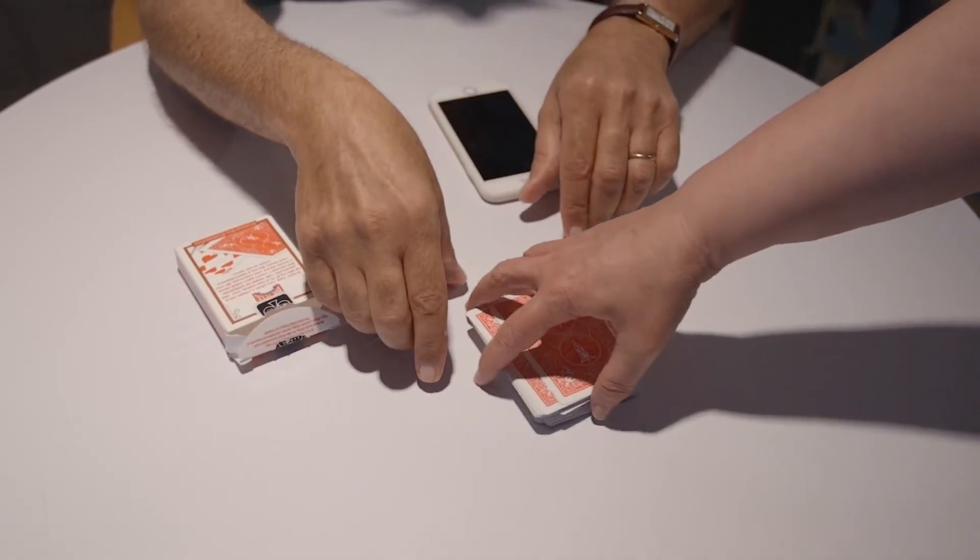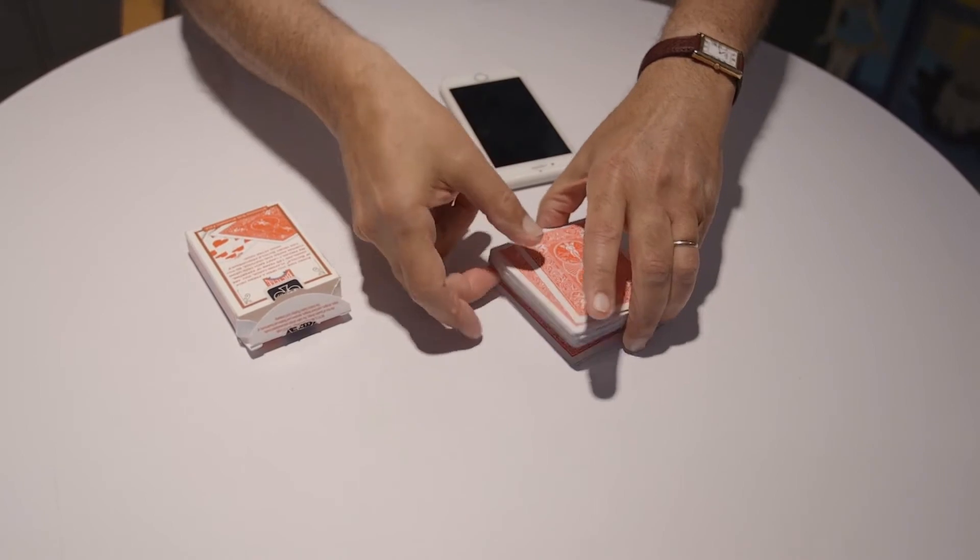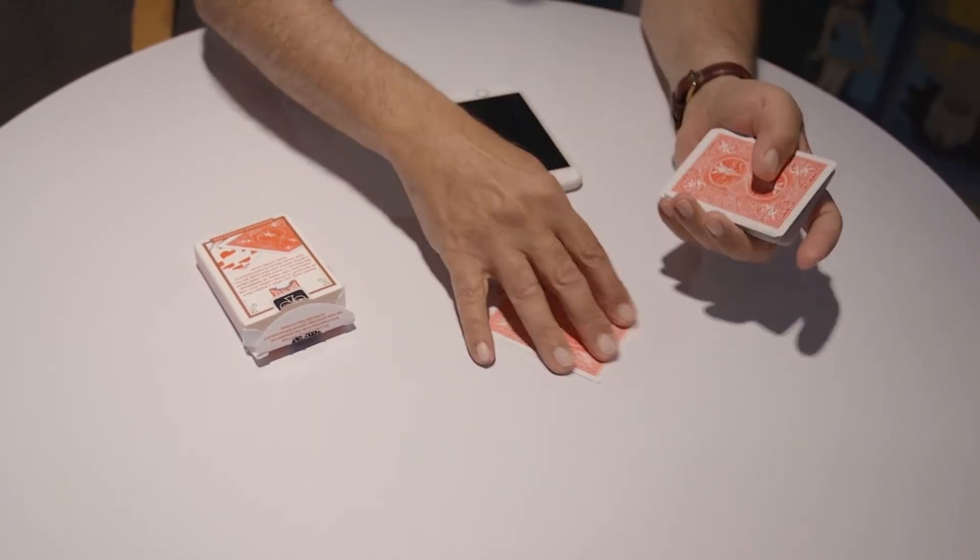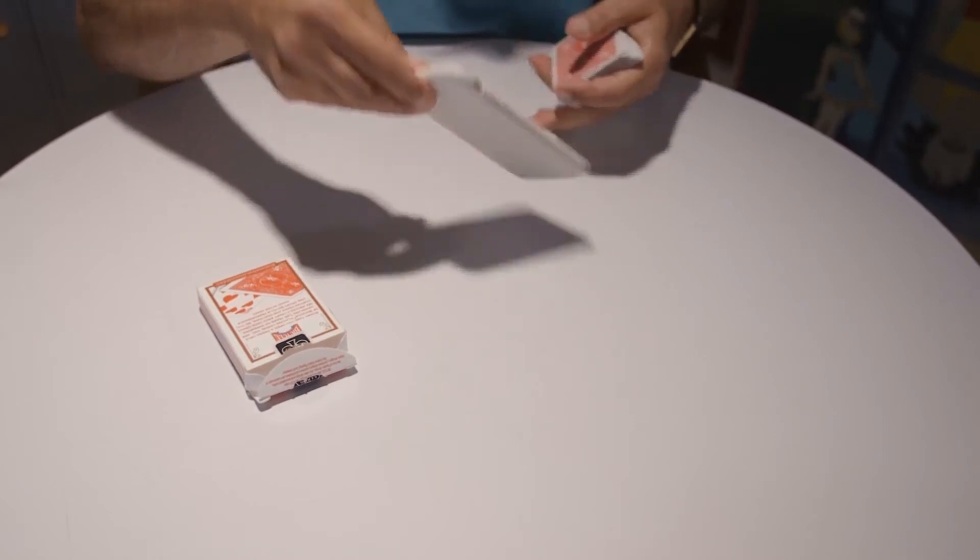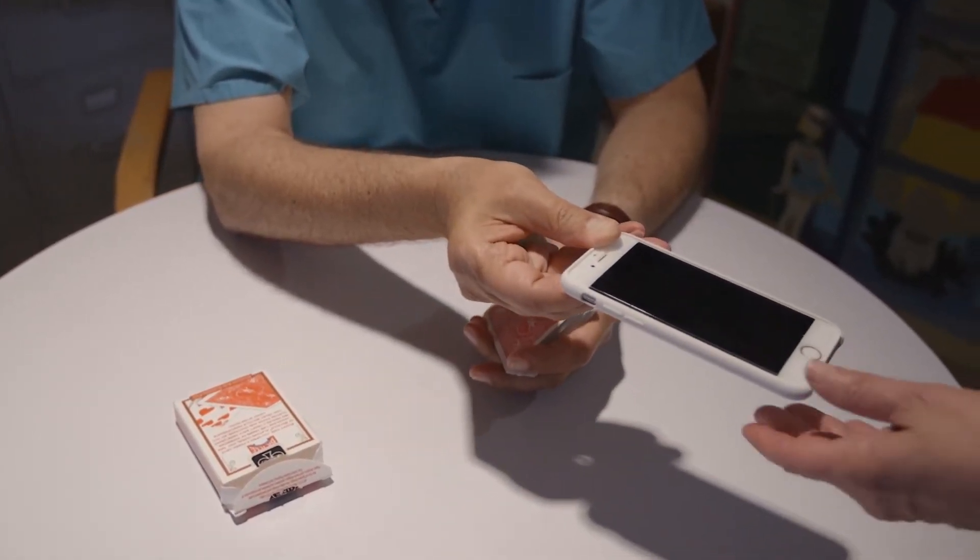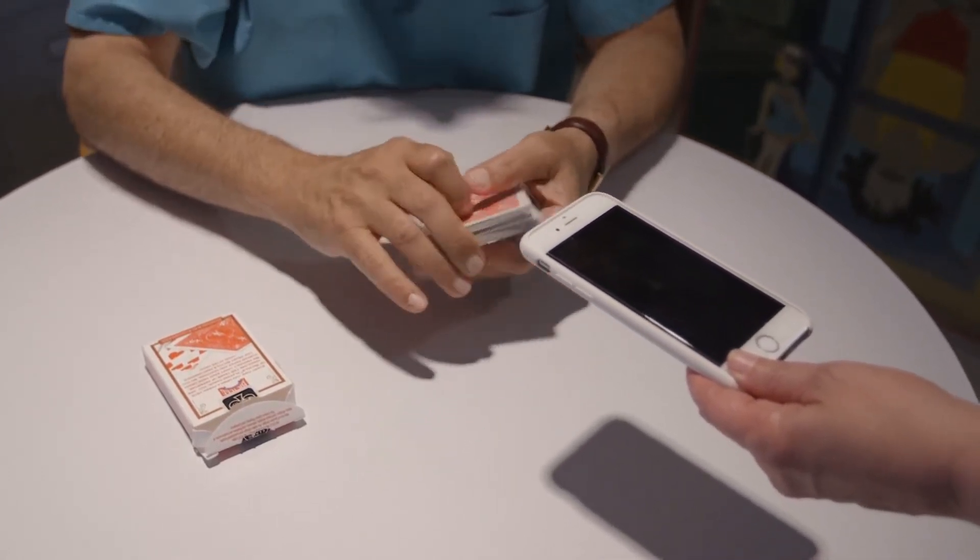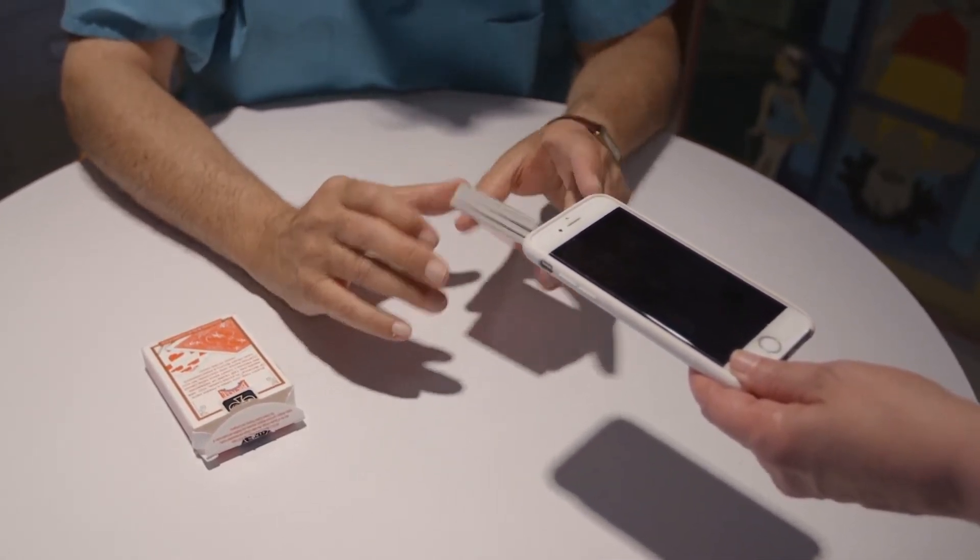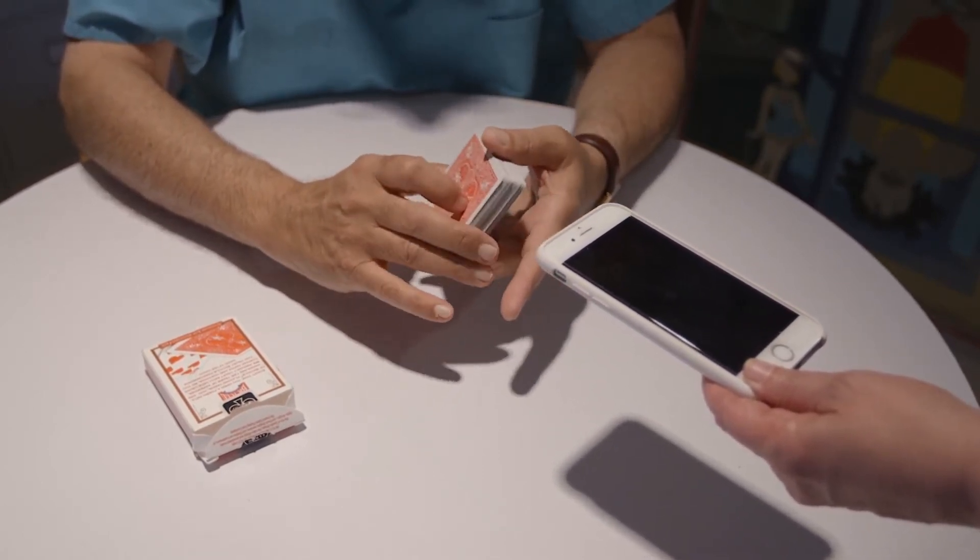Okay. Now comes the reveal. The iPhone is now held by the spectator with the light in this corner over here. You will now go through the cards until the light goes on.